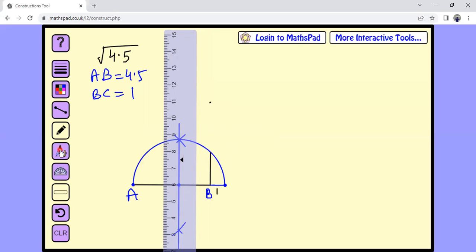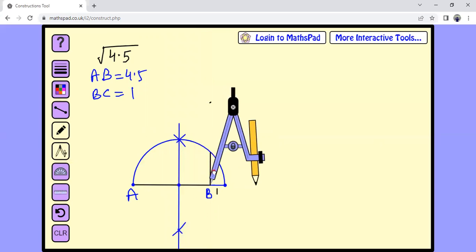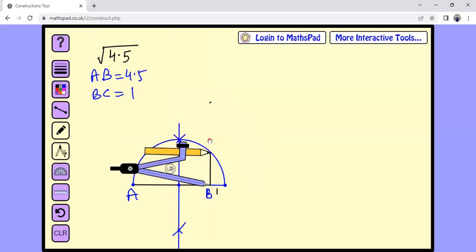Wherever this line intersects the circle, that distance would be square root of 4.5. So we are saying this distance is square root of 4.5.